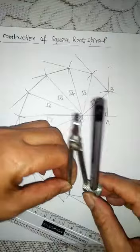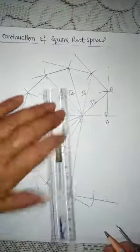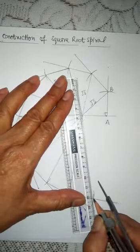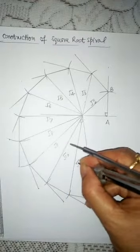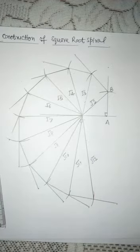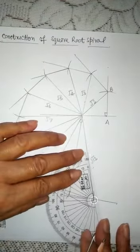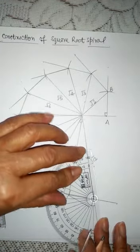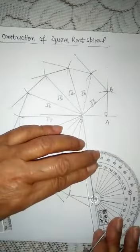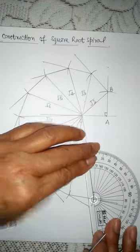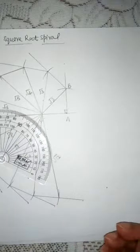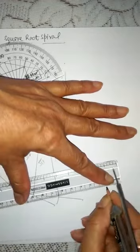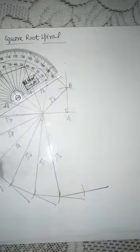Cut 1 inch. Then join with O. How much was it? Under root 9, under root 10, under root 11 — then this will be under root 12. Now again make 90 degree at this point, then draw this line and cut 1 inch. Join it with O.